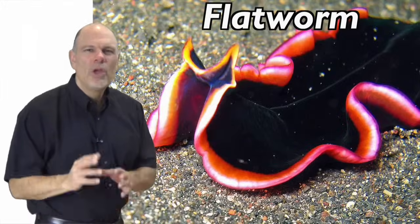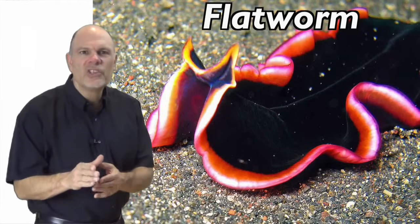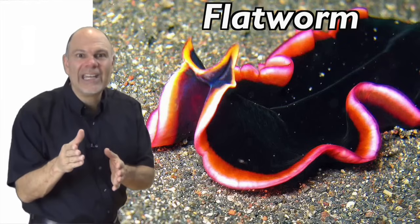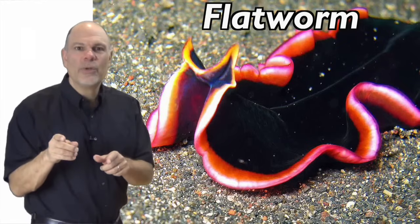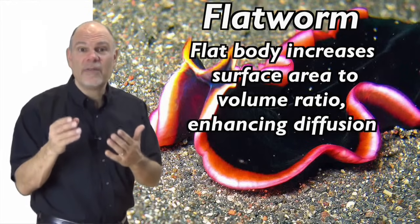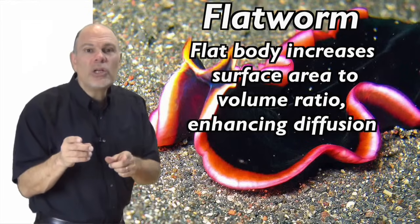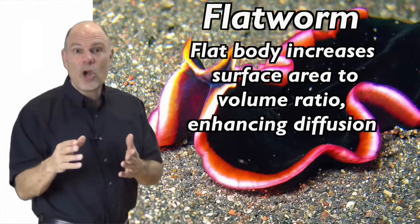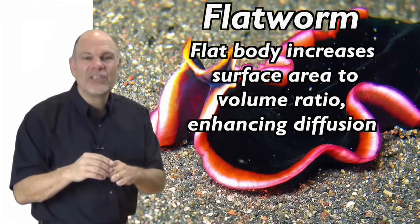And how about this flatworm? No heart, no lungs. How is oxygen getting to all of its cells? How is carbon dioxide getting out? Because these animals are flat, they have a very high surface area to volume ratio. So you can assume that oxygen just diffuses from the surrounding water in, and carbon dioxide from the body cells out.